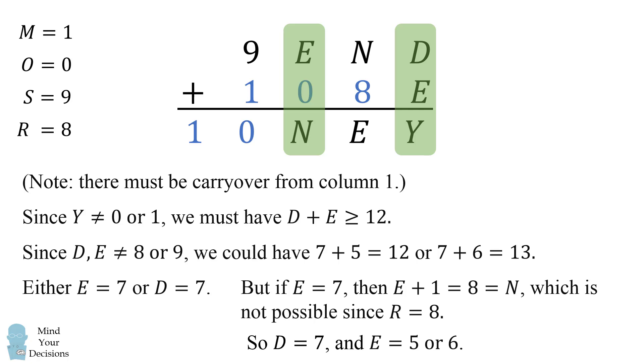This means D is equal to 7, which means E is equal to 5 or 6. Because 7 plus 5 is equal to 12, or 7 plus 6 is equal to 13.